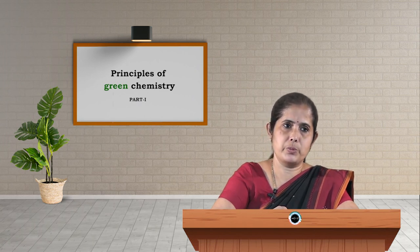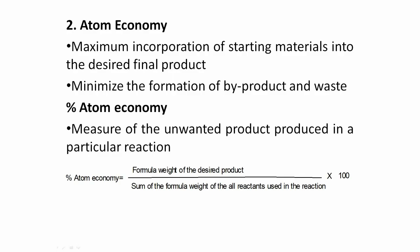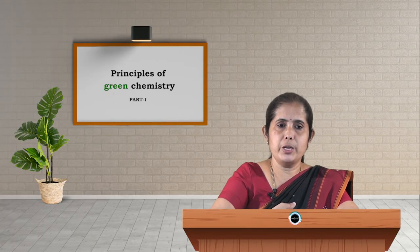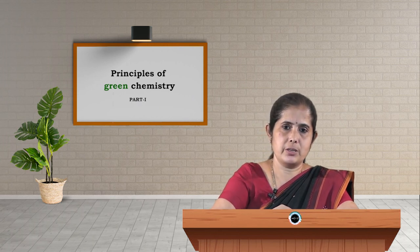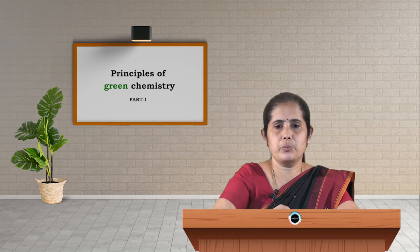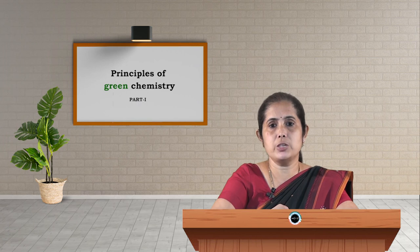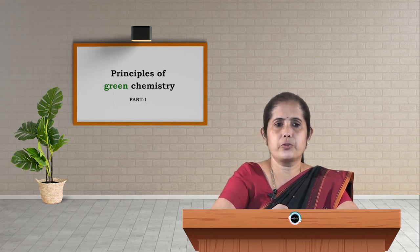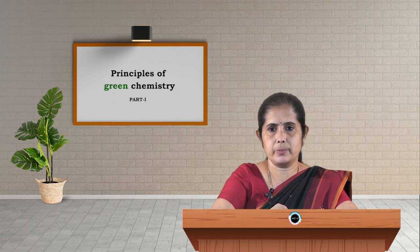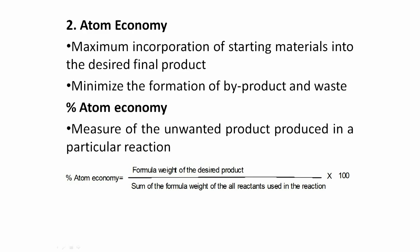What is percent atom economy? It refers to the maximum incorporation of starting materials into the desired product. It means whatever starting material we take for the chemical reaction should completely get converted into the product — in other terms, it is 100% yield. Minimizing byproduct and waste formation gives 100% yield. Percent atom economy is equal to the formula weight of the desired product divided by the sum of the formula weights of all reactants used in the reaction, multiplied by 100.